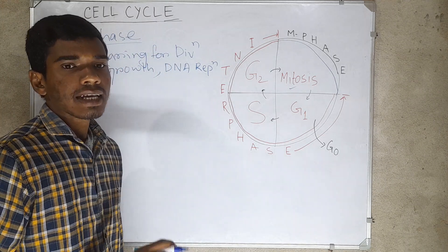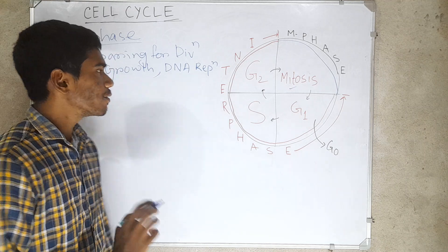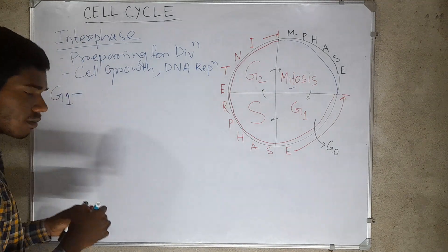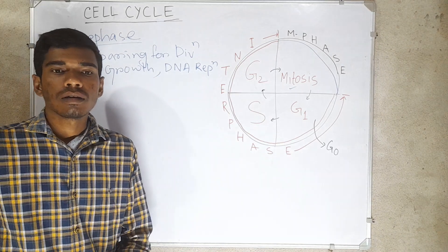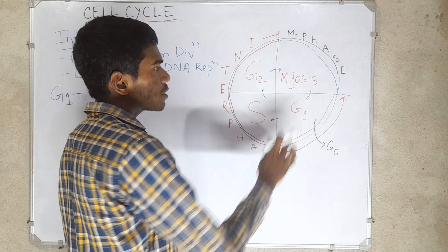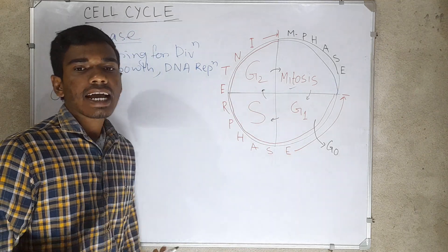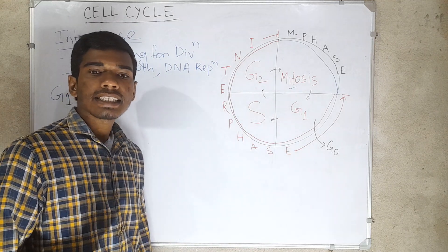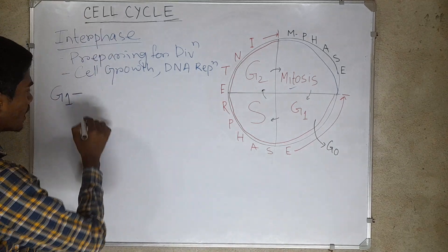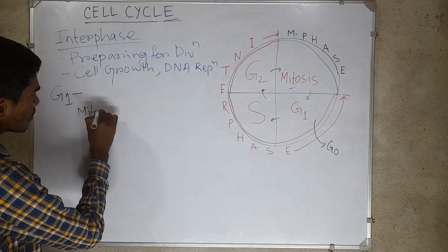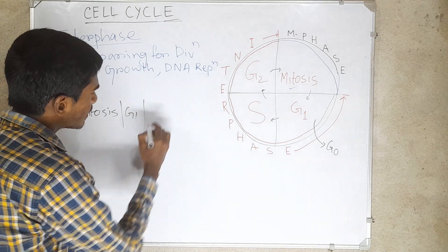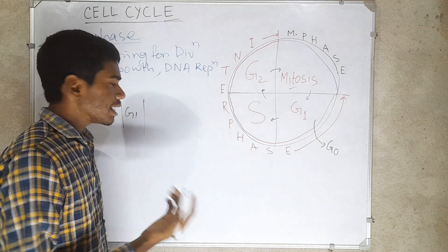Let's discuss gap phase 1, or G1 phase. This phase starts after mitosis and ends at the initiation of DNA replication — that means it is the phase between mitosis and the start of DNA replication.